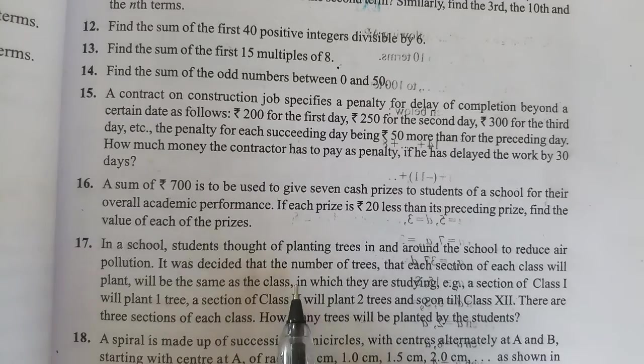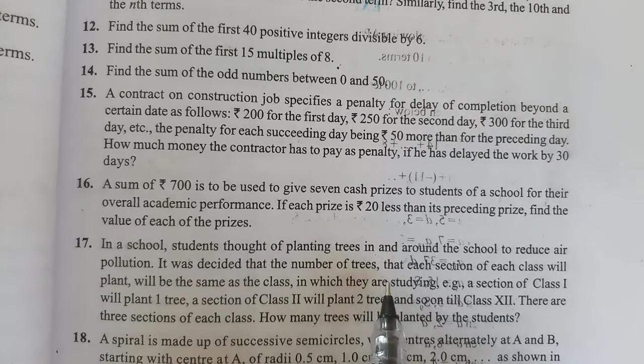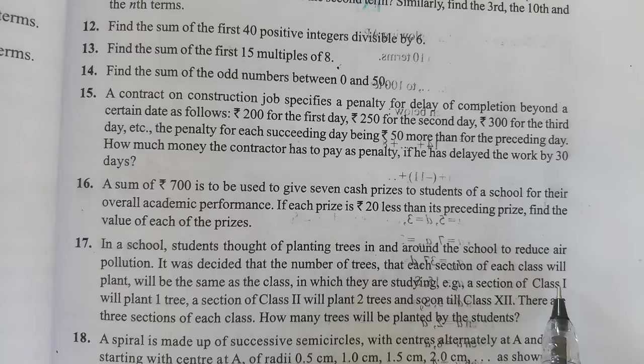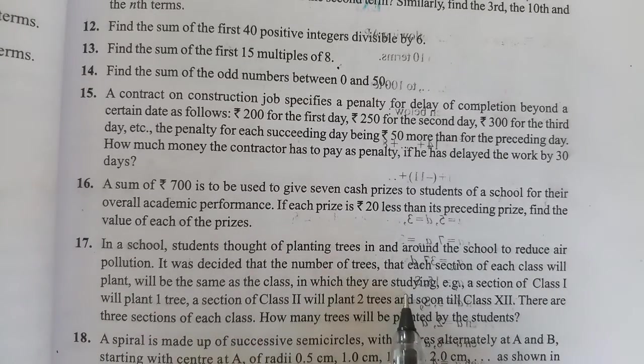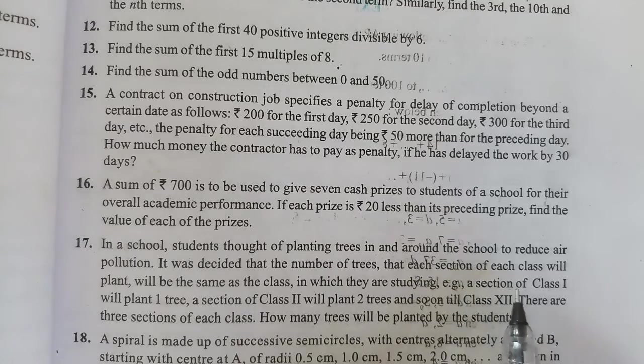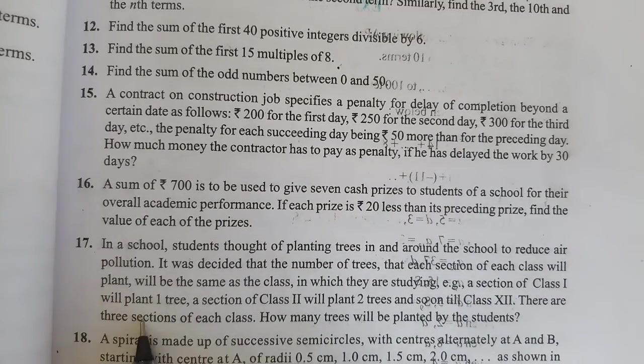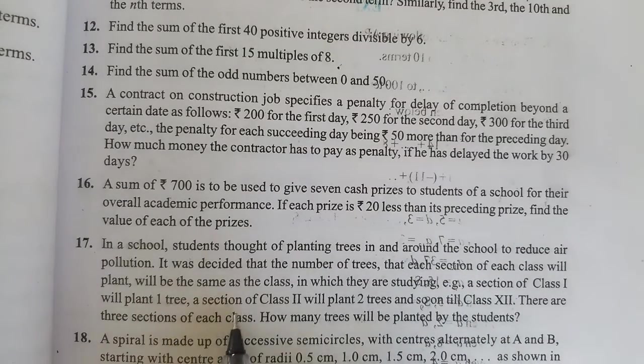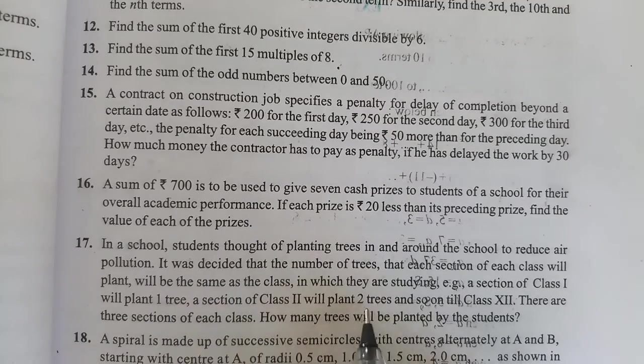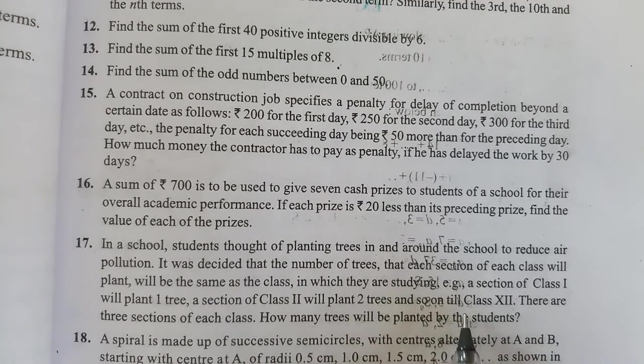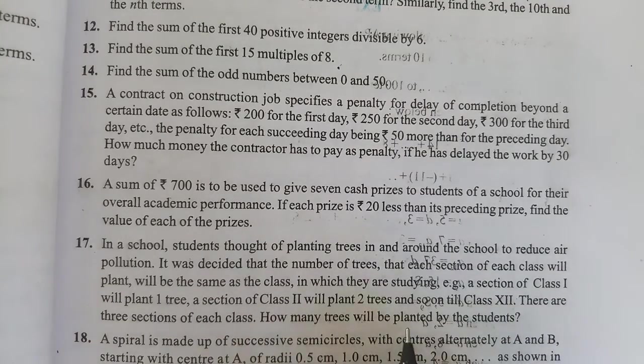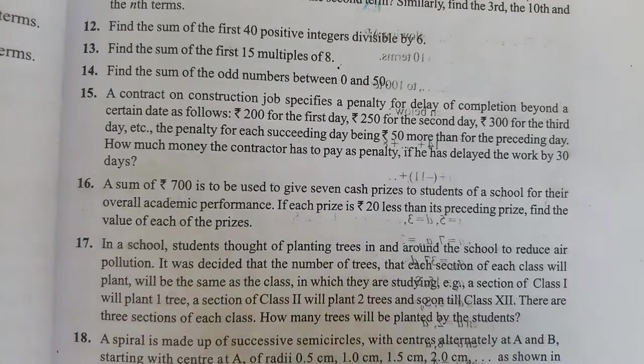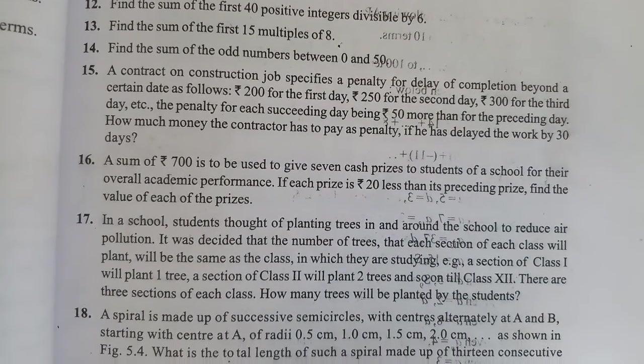It was decided that the number of trees that each section of each class will plant will be the same as the class in which they are studying. For example, a section of class 1 will plant one tree, a section of class 2 will plant two trees and so on till 12th. There are three sections of each class. How many trees will be planted by the students?